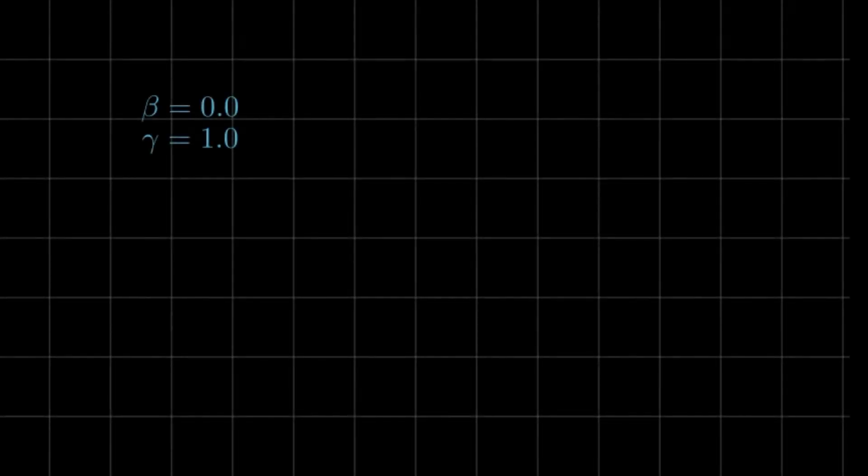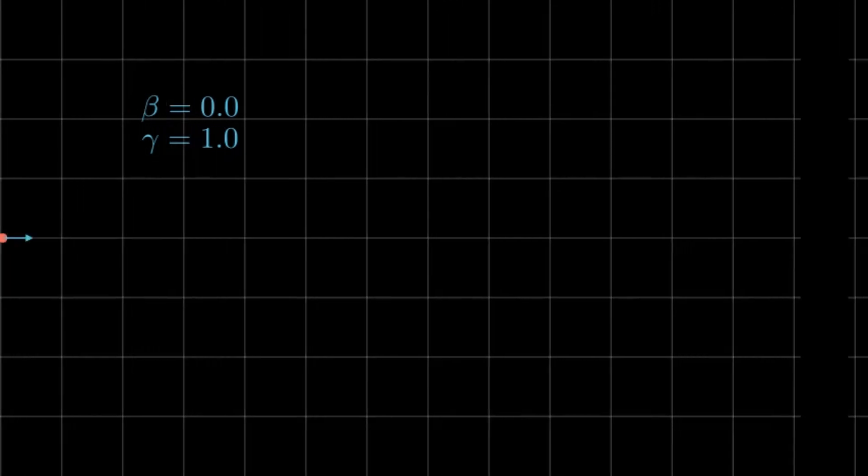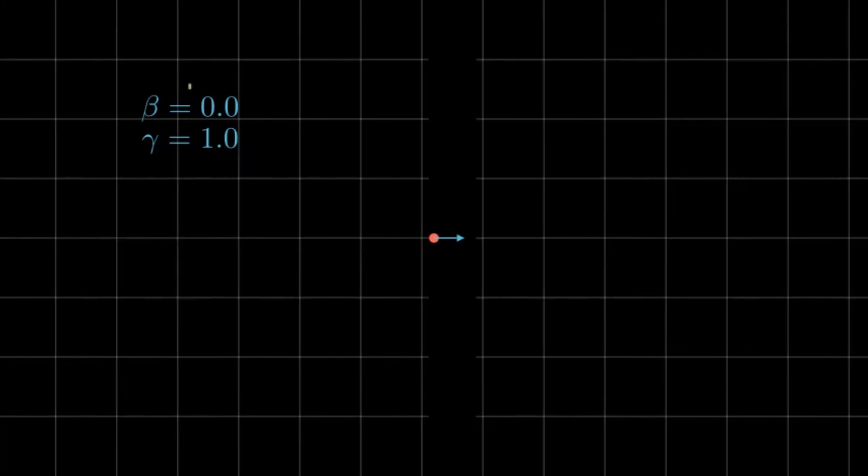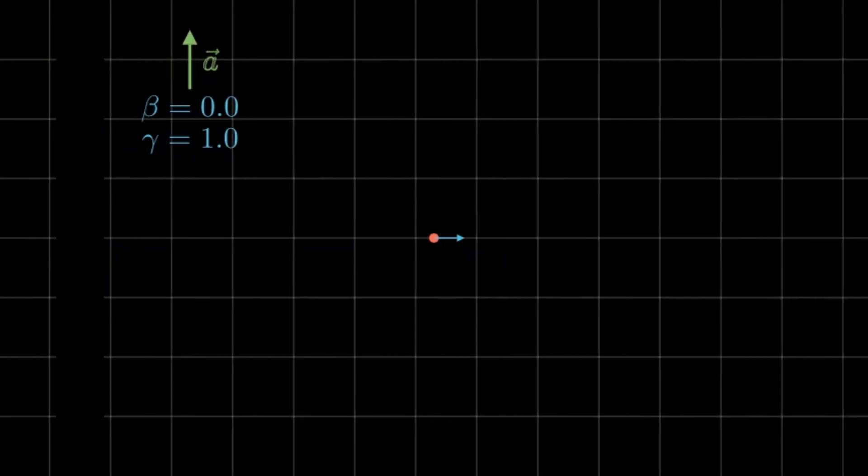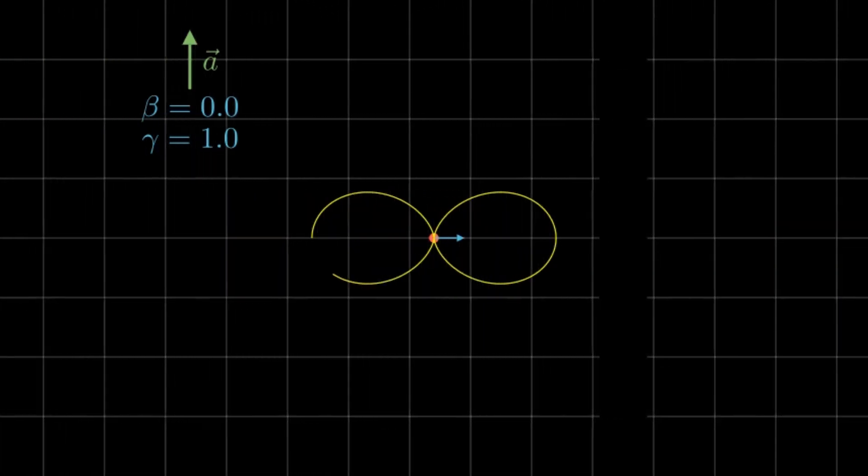Now let's look at a very similar case, but one that has a very different effect at low relativistic velocities. Again, starting out with an electron at constant velocity, now we introduce a perpendicular acceleration in the upwards direction. Remember that I am not visually showing how acceleration changes the motion in this particular case. That will be for the next visualization.